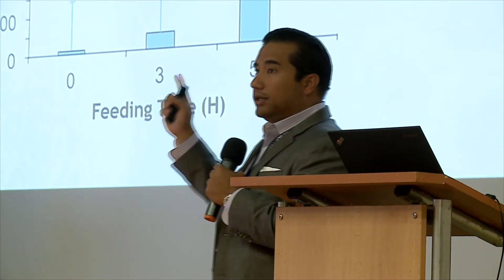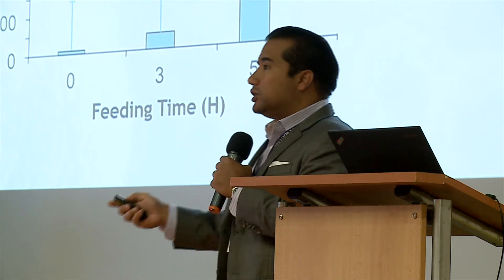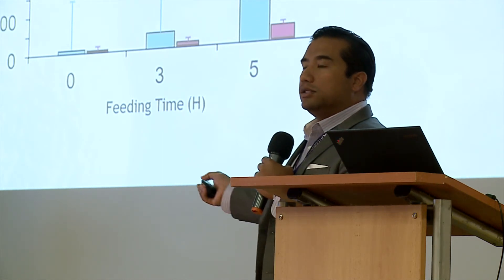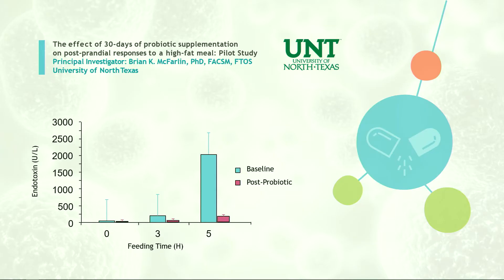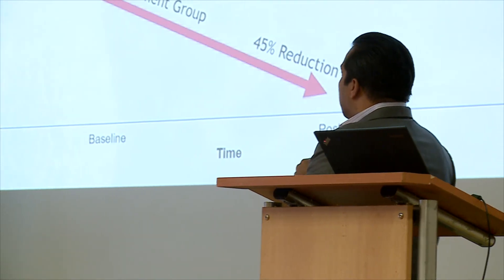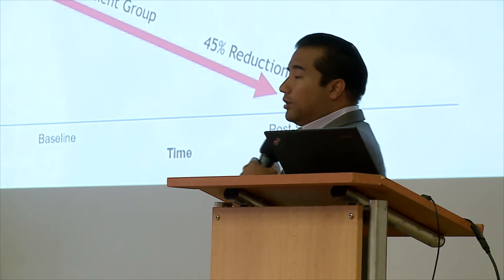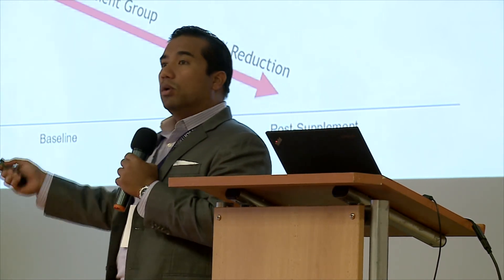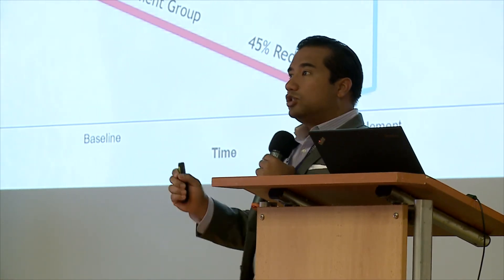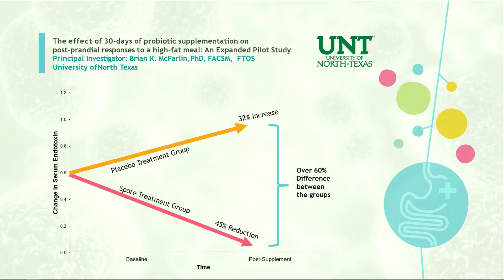We gave them the probiotic in the pilot study for 30 days with no other changes or interventions, then measured them again with the same challenge. We saw almost a complete blunting of the LPS response to a meal. In the larger-scale study, the spore treatment group showed about a 45% reduction in endotoxemia after 30 days of taking the probiotic — again, no dietary changes, no interventions at all. But in the placebo group, we actually saw a 32% increase in endotoxemia. So there was over a 60% difference between the two groups.